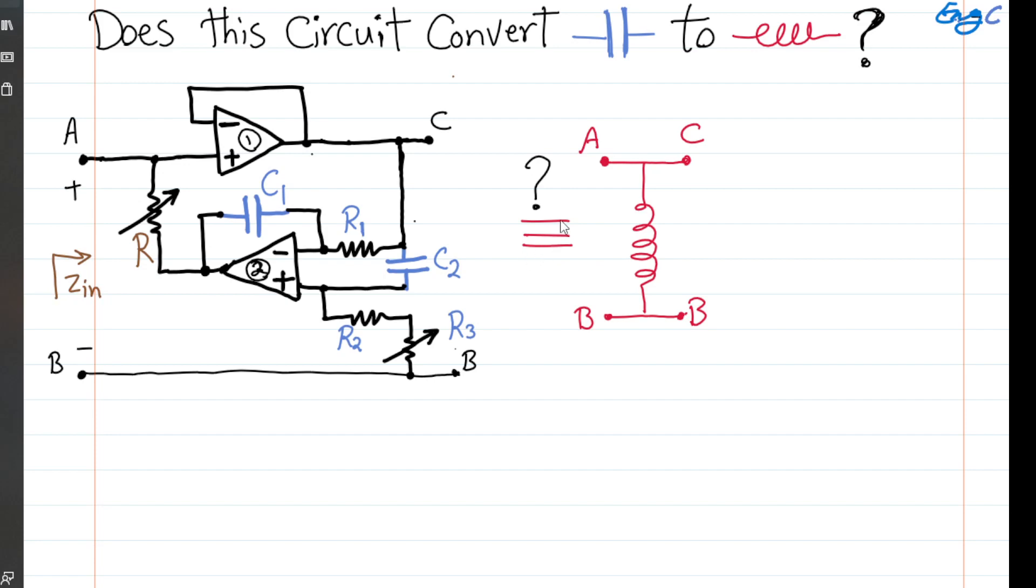And effectively, if this is true, we can realize high Q inductor in a reasonable, practical range using a circuit that doesn't have any inductor. It just has two ideal opamps and two capacitors. So somehow this circuit is converting capacitance to inductance, if this is true. Let's see.